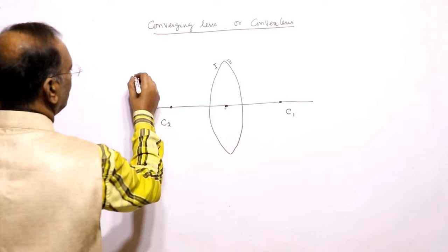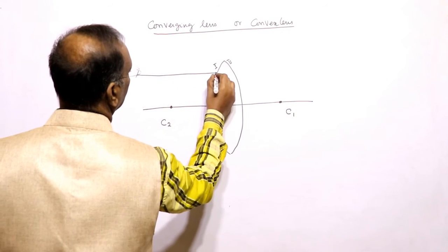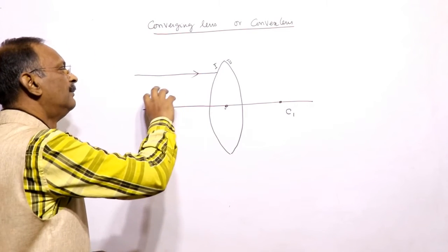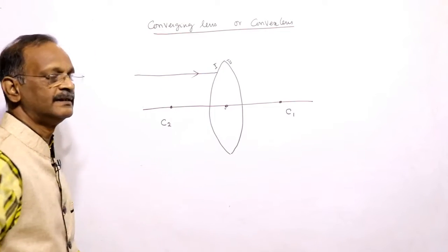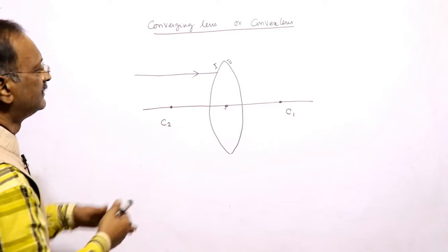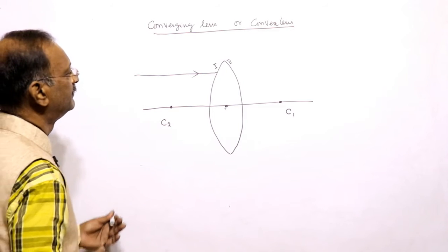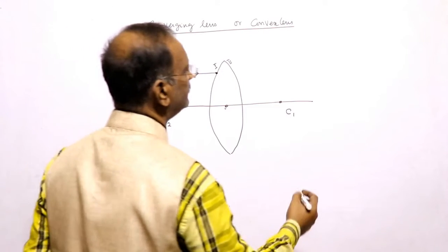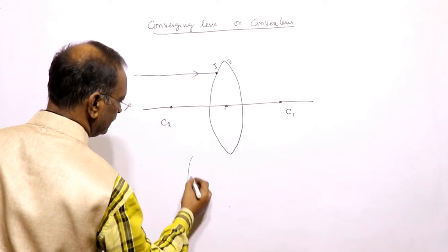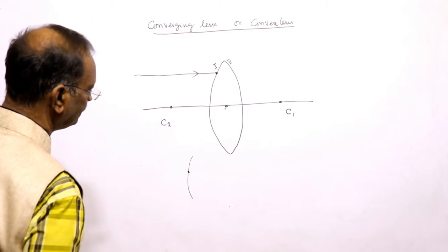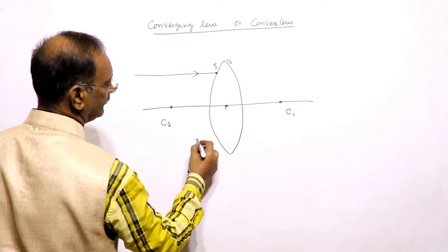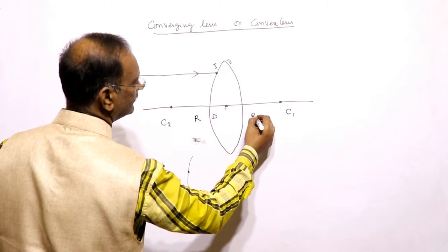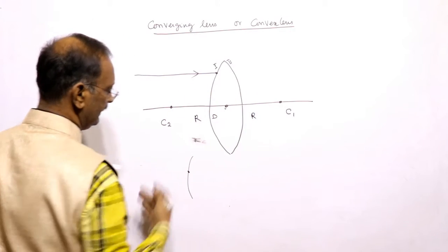A ray incident parallel to the principal axis should be a paraxial ray. Paraxial ray means it is very close and parallel to the principal axis — not away from the principal axis. When it is incident at this surface, there will occur a refraction because this is rarer medium, this is denser medium, and again this is rarer medium.